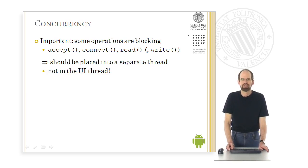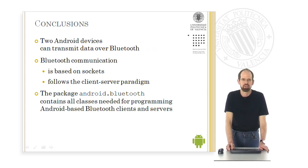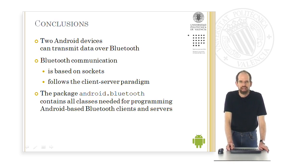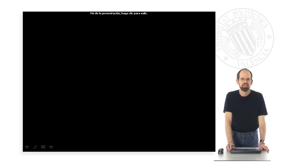It is important to understand that some of these operations are blocking. Accept, connect, and read are always blocking, and write is blocking in some cases. Therefore, these operations should not be placed in the UI thread — they should be executed by a separate thread. In summary, we learned that two Android devices can exchange data over Bluetooth, that Bluetooth communication is based on sockets and follows the client-server model, and that the Android.Bluetooth package contains all the classes needed to program Android-based Bluetooth clients and servers. Thank you for your attention.